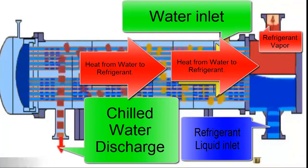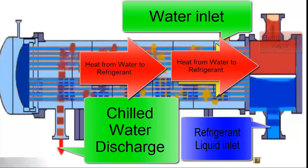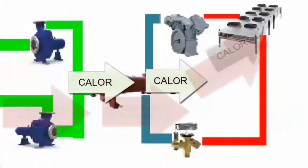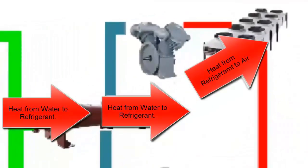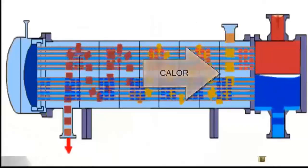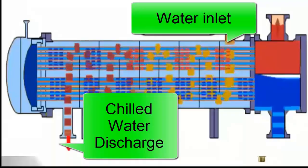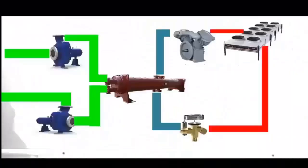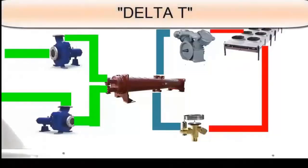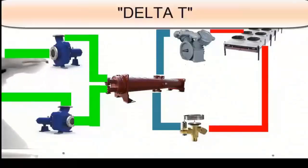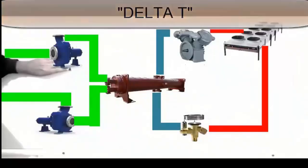The heat exchange in the cooler is a central process in the operation of the chiller. Water enters the cooler at a higher temperature, and thanks to the thermal exchange with the refrigerant, its temperature decreases significantly. This cooling process is what allows the chiller to fulfill its main function of maintaining a controlled temperature in the system. A key technical term in this process is delta T, which represents the difference between the inlet and outlet temperatures of the water in the cooler.